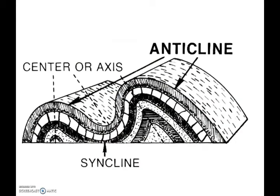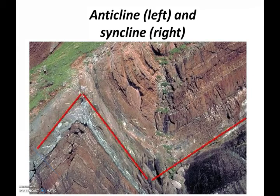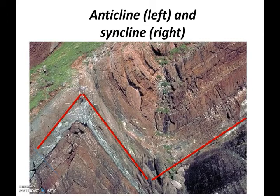The two most common types of folds are anticlines and synclines. Anticlines, as you can see on the right, are examples of upturned folds. Synclines, in the center, are examples of downturned folds. It's often the case that we see anticlines and synclines in pairs, as we see in this road cut image, with the anticline on the left and the syncline on the right.